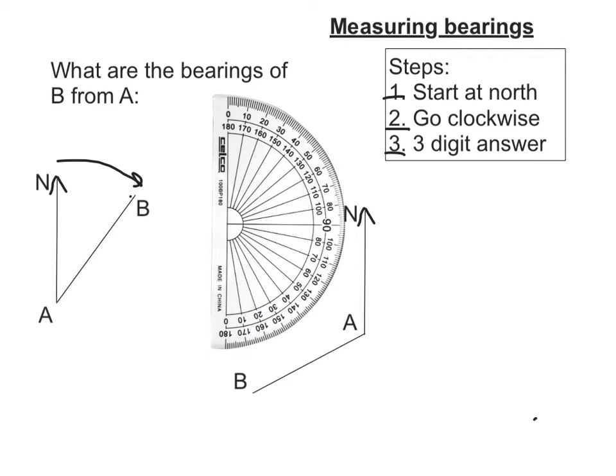And on my reckoning that is 37. So taking this away, it's 37. Remember we need to give it a three digit answer. So this bearing is 037 degrees.